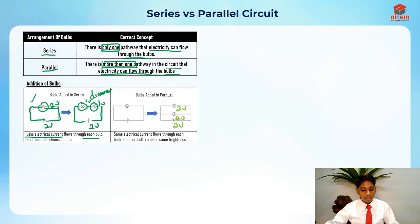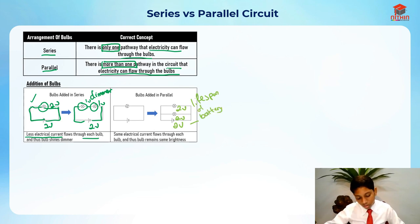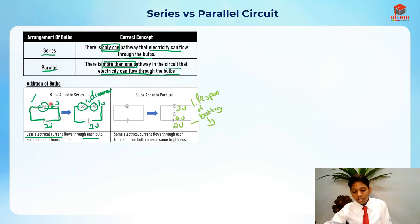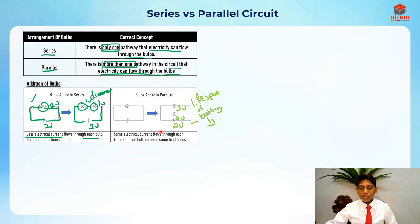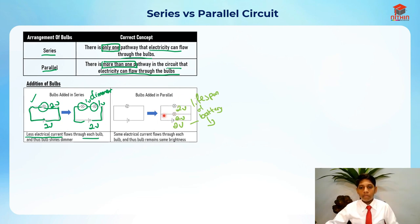In a parallel circuit, the same electric current flows through each bulb — two volts for each — and thus the bulbs remain the same brightness. So this bulb equals this bulb in terms of brightness. In a series circuit, the battery lasts longer, while in a parallel circuit, the battery is used up faster.